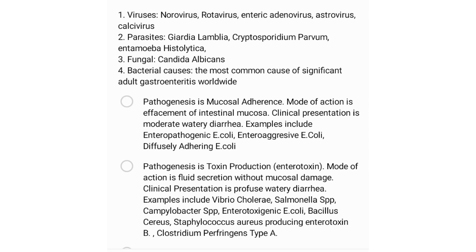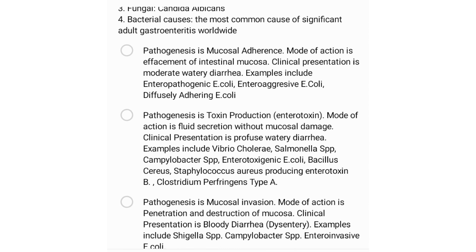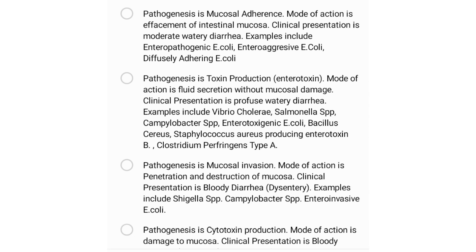Other pathogens have a pathogenesis of toxin production or enterotoxins, with a mode of action of fluid secretion without mucosal damage, and clinical presentation of profuse watery diarrhea. Examples include Vibrio cholerae, Salmonella species, Campylobacter species, enterotoxigenic E. coli, Bacillus cereus, Staphylococcus aureus producing enterotoxin B, and Clostridium perfringens type A.